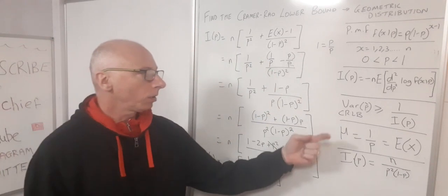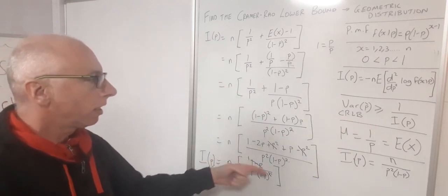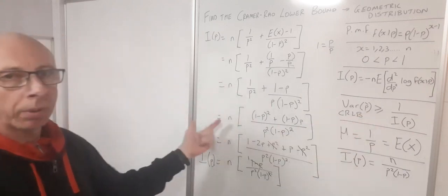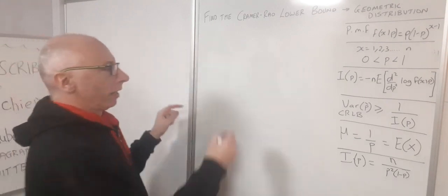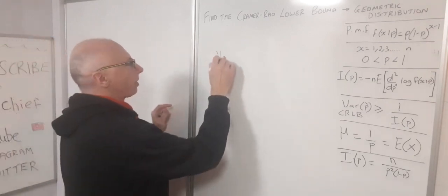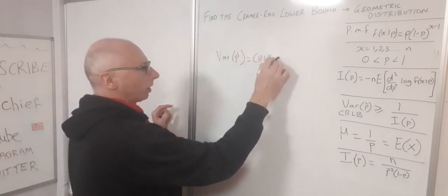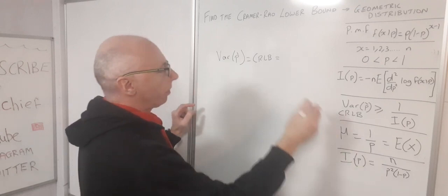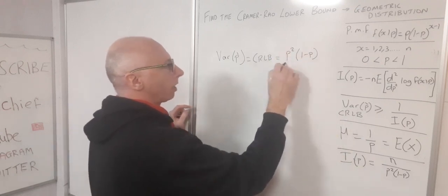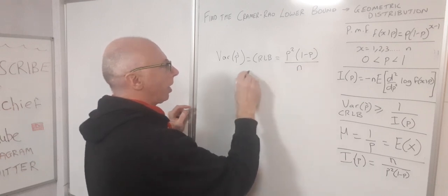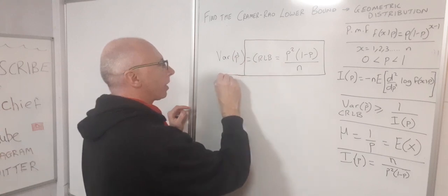That's not our final goal — our end goal is the Cramér-Rao lower bound. The variance of p, which equals the Cramér-Rao lower bound, is the reciprocal of Fisher's information function: p squared times (1 minus p) all divided by n. This is our final answer.